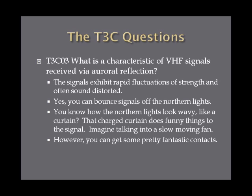What is the characteristic of VHF signals received via auroral reflection? The signals exhibit rapid fluctuations of strength and often sound distorted. You can bounce signals off of the Northern Lights. If you know how the Northern Lights look wavy and kind of like a curtain, that's because they are. That charged curtain does funny things to the signal, the way it reflects back to the Earth. If you imagine talking into a slow-moving fan, it's kind of like that. That reflection is received in your radio and it causes fluctuations and strength changes and distorted sounds sometimes.